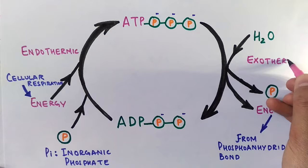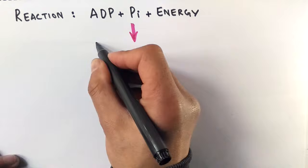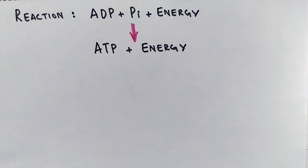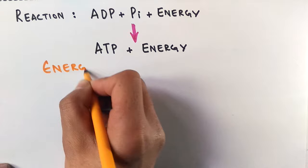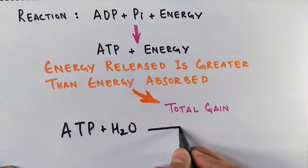If we see the reaction here: ADP molecule combined with inorganic phosphate in presence of energy yields ATP molecule plus energy. That means there's absorption of energy, there's release of energy, so both endothermic as well as exothermic. In order to drive the cellular process, there must be a net total gain in energy. So it must be noted here: the energy released is always greater than the energy absorbed in that ATP cycle. So we have a total gain here. ATP plus water gives us ADP plus inorganic phosphate plus energy, and this is a reversible reaction that makes it a cycle.